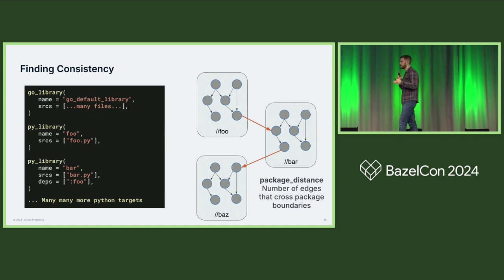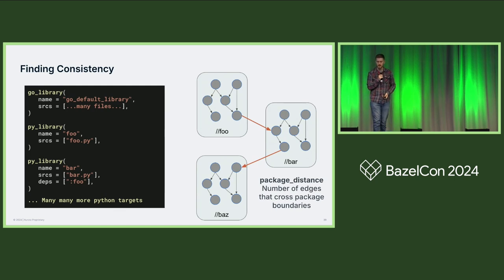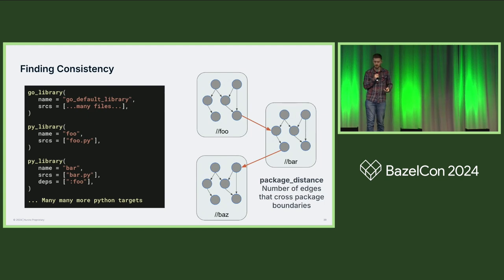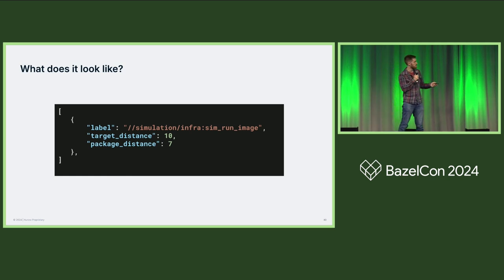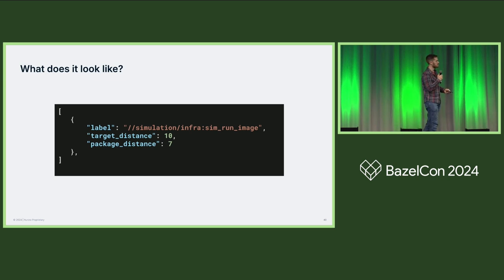We computed an additional metric: package distance, which only counts dependency edges that cross a package boundary. This works well because packages are more cohesive units in Bazel — you can restrict visibility of what goes in and out of them. It makes more sense when asking: when do I run this integration test? If you're changing something very far away, skip it. Our changed target system outputs, for each target, its label, target distance, and package distance. A target distance of zero means it was directly modified; a package distance of zero means someone changed another target in that same package.